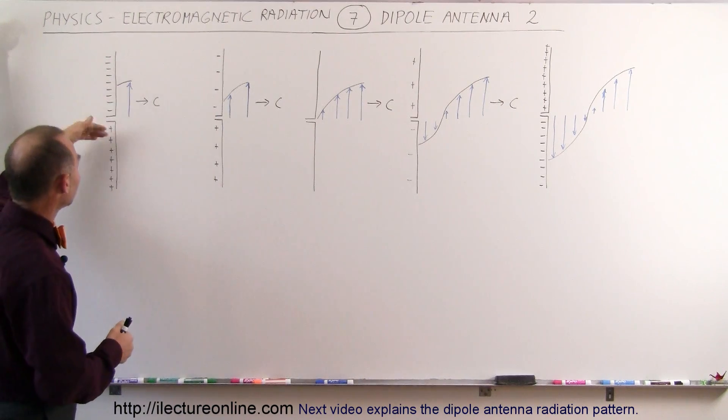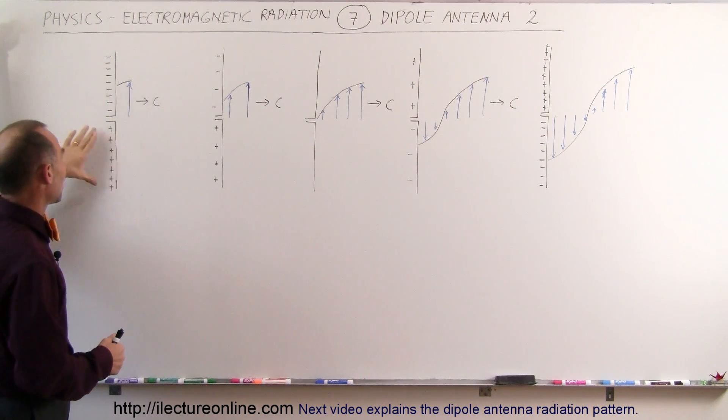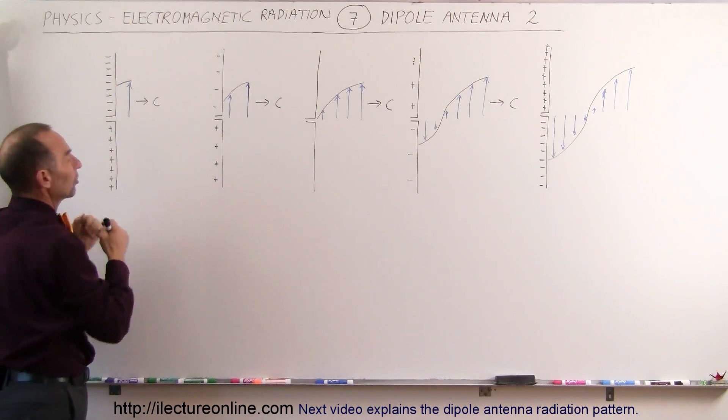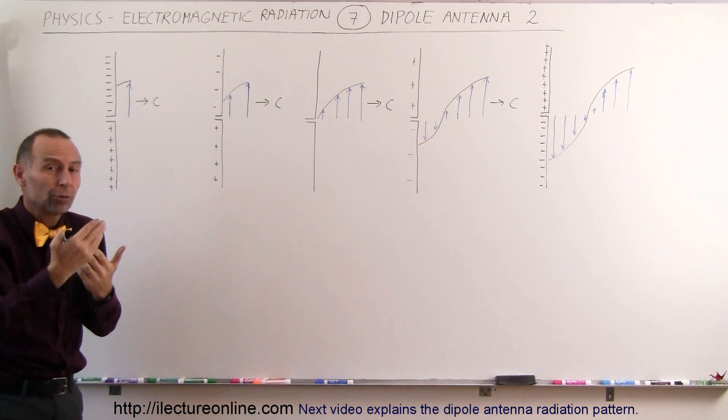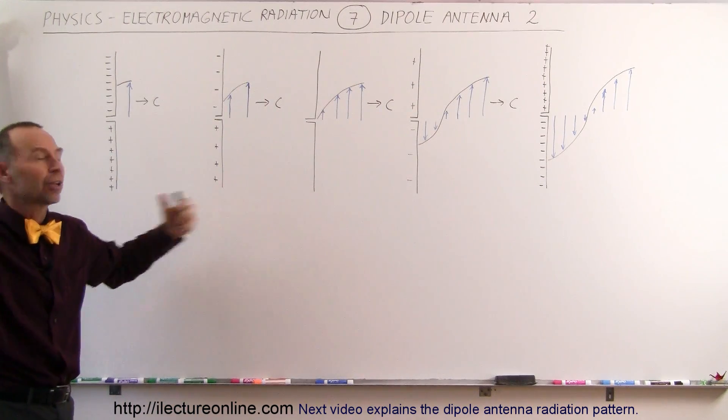So here we have again a dipole antenna, and notice that at this moment the top half is negatively charged, the bottom half is positively charged, so there's an electric field around the antenna in an upward direction. Of course, that electric field is a disturbance because it's constantly changing, and that disturbance will then go outward at the speed of light.